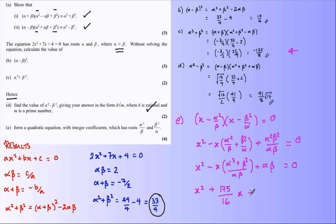And so finally what I'm going to say: multiply everything by 16 so I've got integer coefficients. 16x² + 175x + 32 = 0. That is my final quadratic equation and that's done.